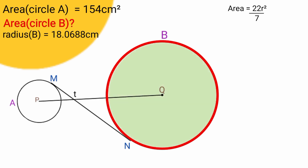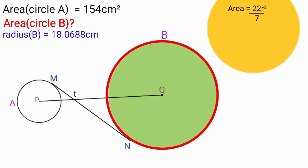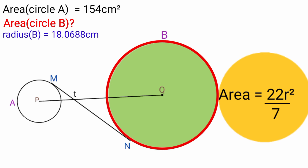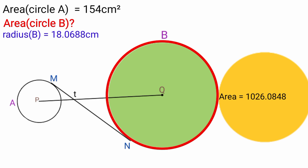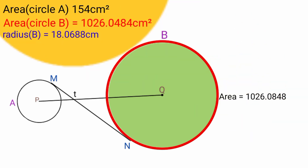Now to find the area of circle B, we substitute 18.0688 into the formula. So area equals 22 over 7 times 18.0688 squared, which equals 1026.0848. So the area of circle B is 1026.0848 centimeters squared.